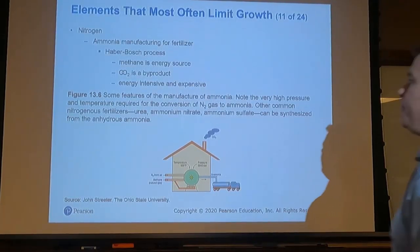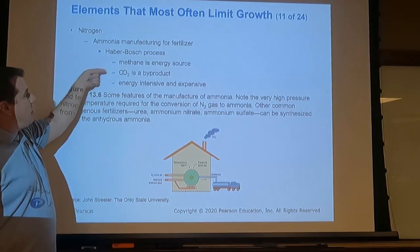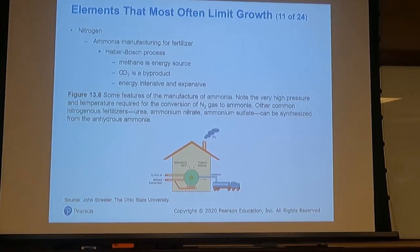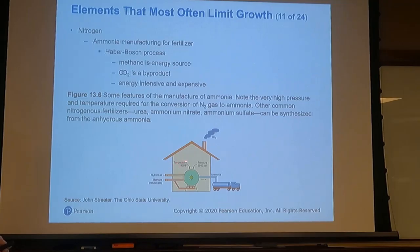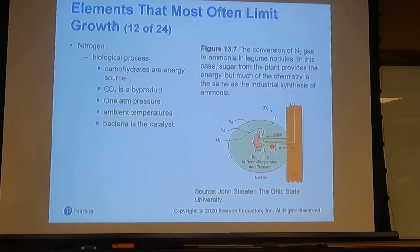The Haber-Bosch process requires temperature, pressure, and a catalyst. We typically use methane or natural gas as the energy source, and CO₂ is a byproduct. At roughly 930°F and about 3,000 PSI, N₂ gas is converted to ammonia — it's difficult and energy-intensive, which is why fertilizers are so expensive.